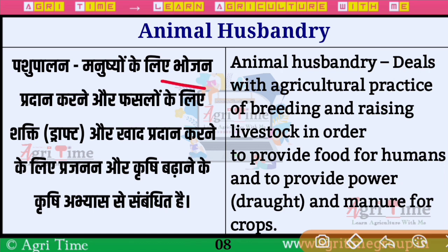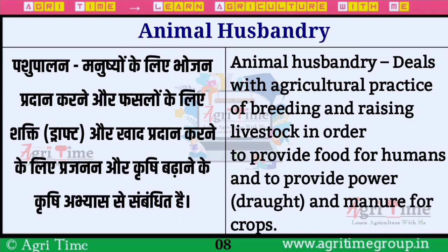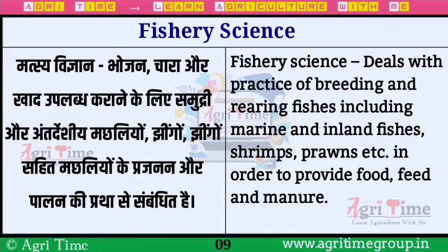अगला branch है Animal Husbandry, यानि कि पशु पालन। यह फसलों के लिए शक्ति (draft) और खाद प्रदान करने के लिए पशुओं के प्रजनन और Krishi को बढ़ाने के लिए Krishi अभ्यास से संबंधित है।